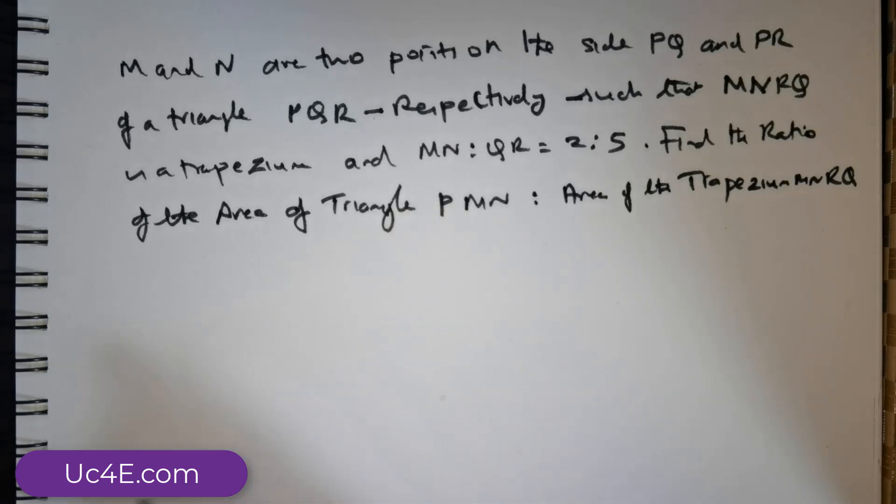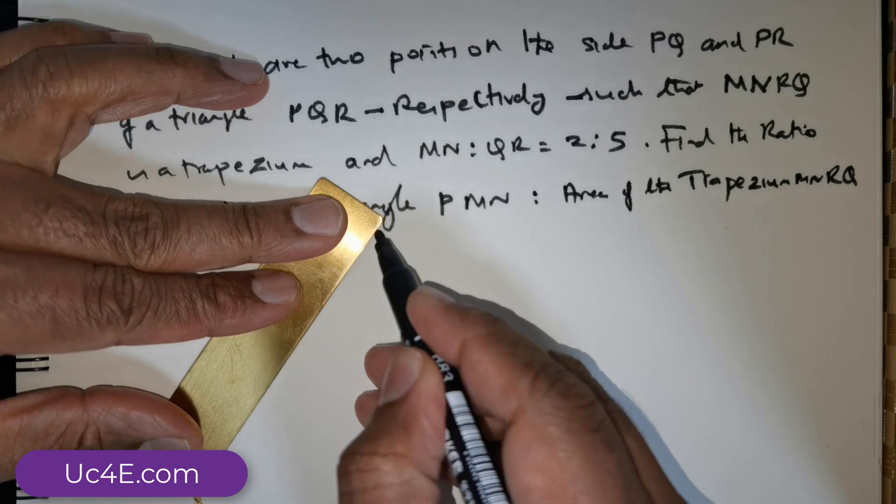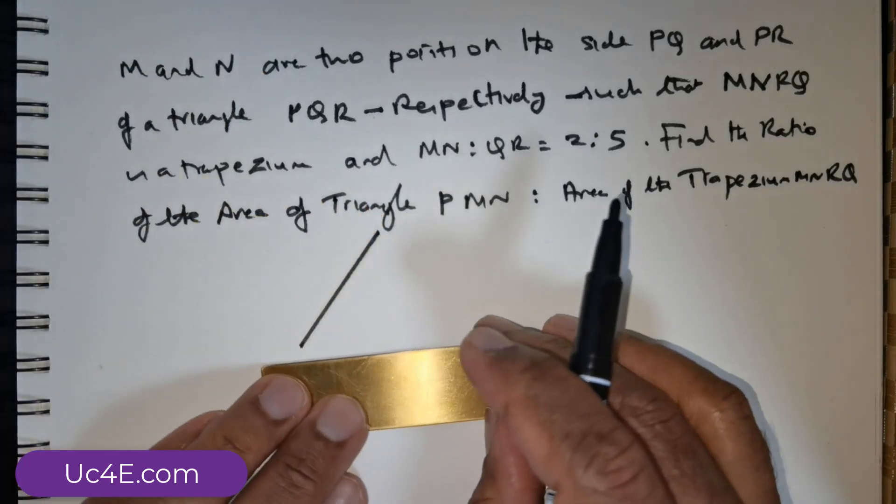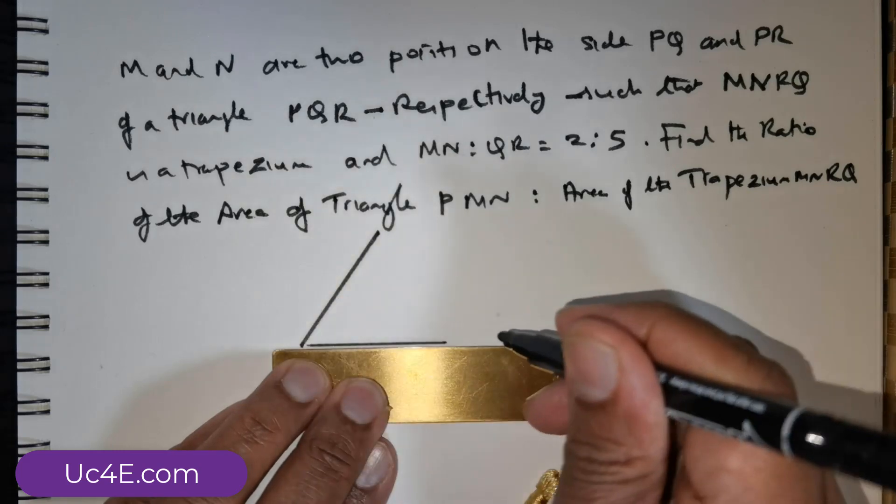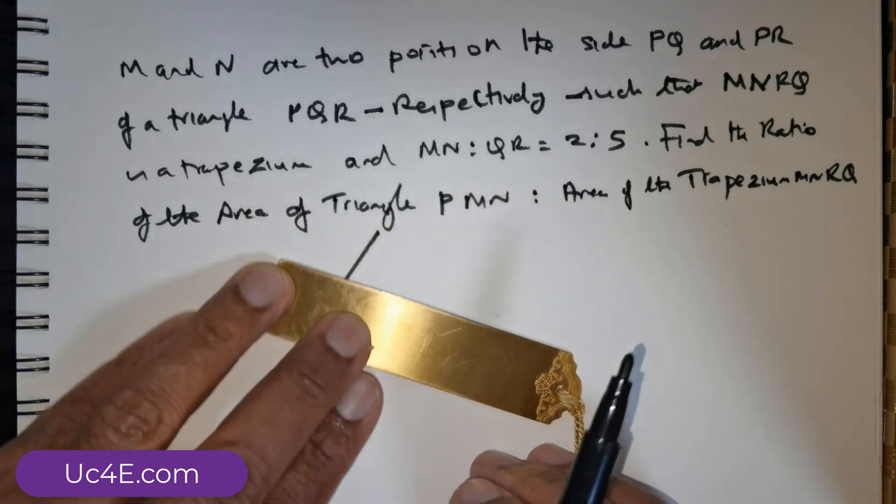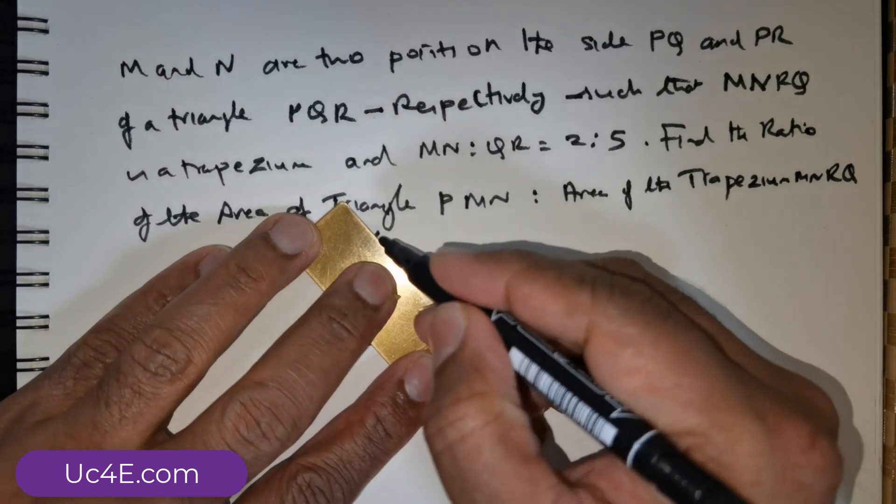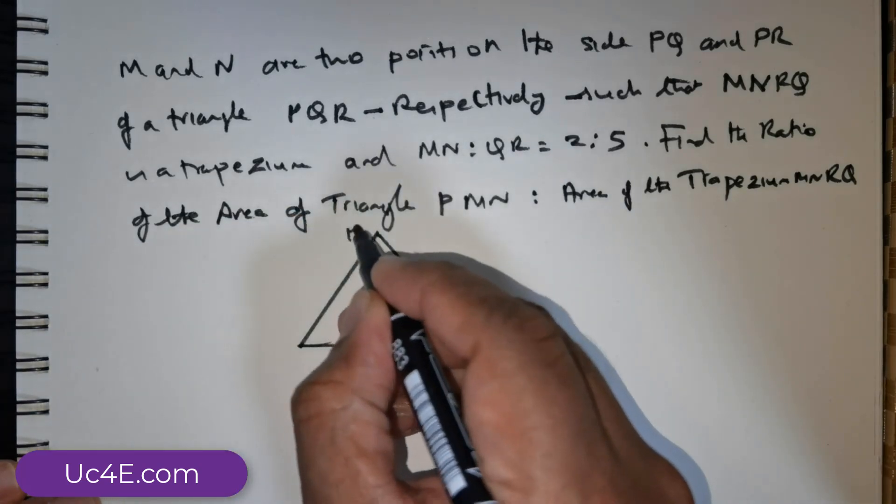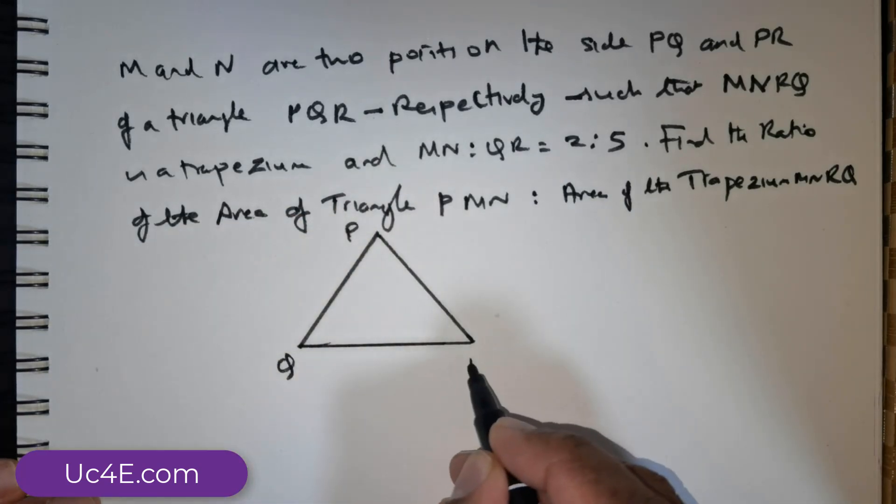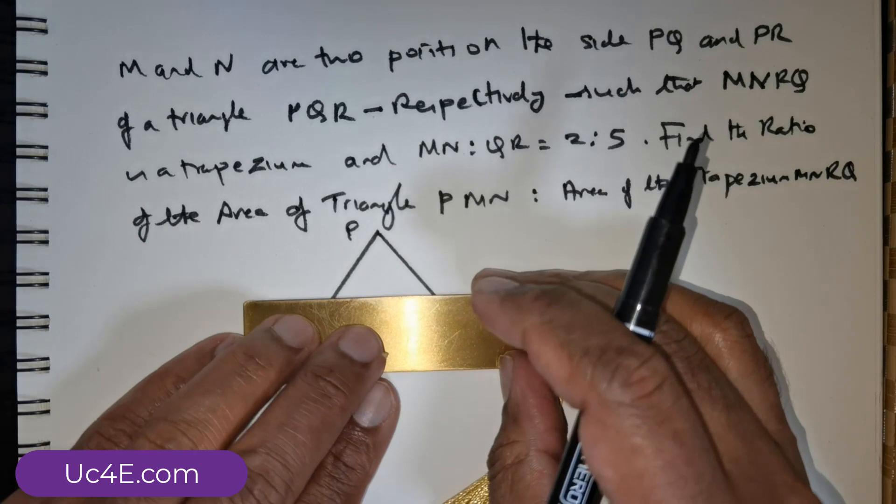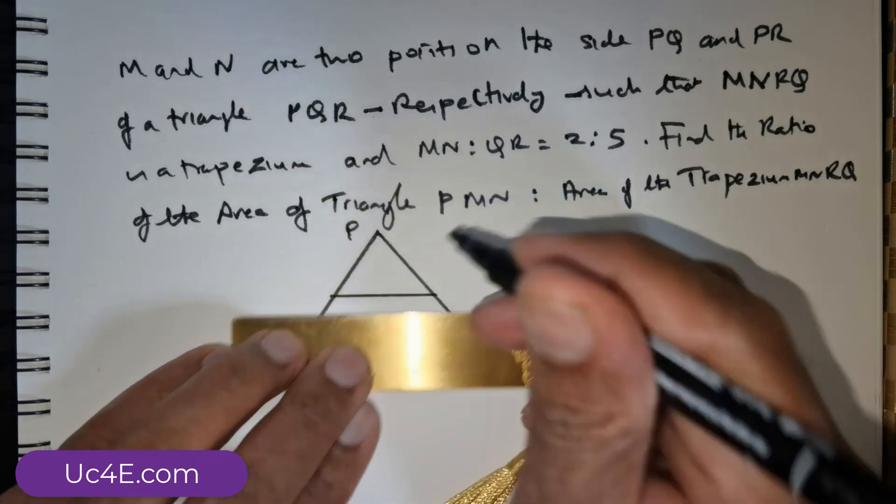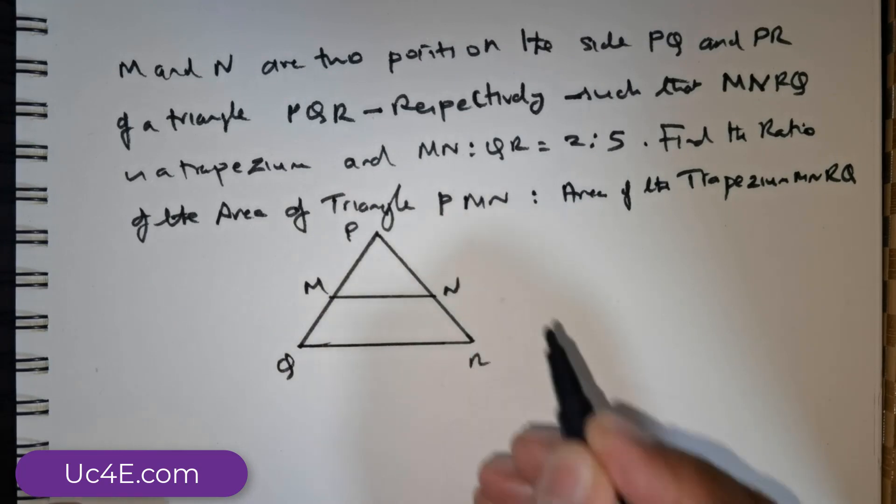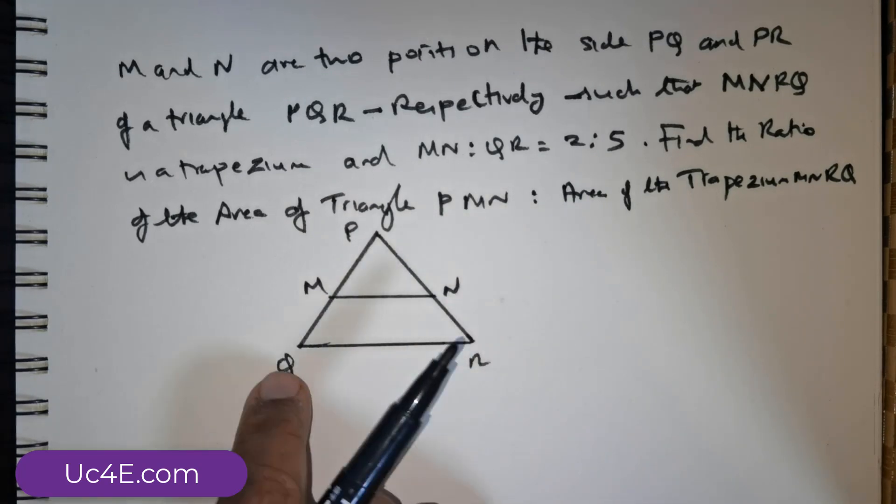Now if we were to draw the triangle, the triangle looks of this form. So we got P there, Q, R, you have two points, M and N.